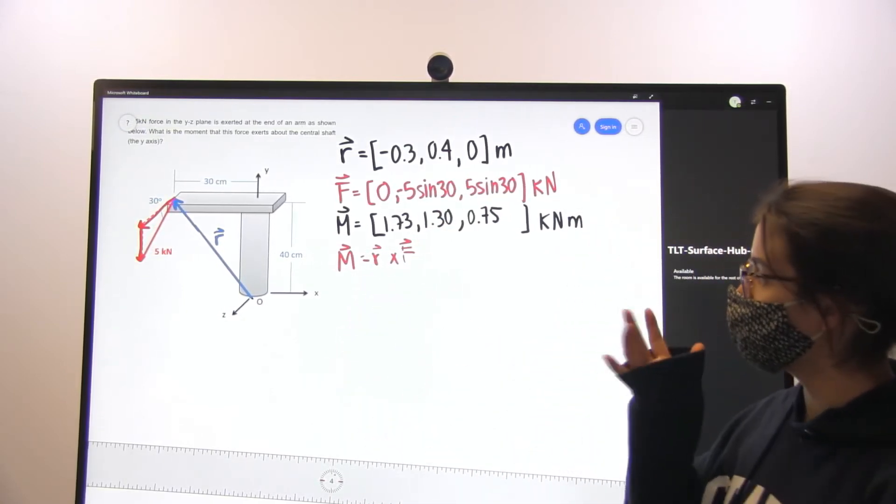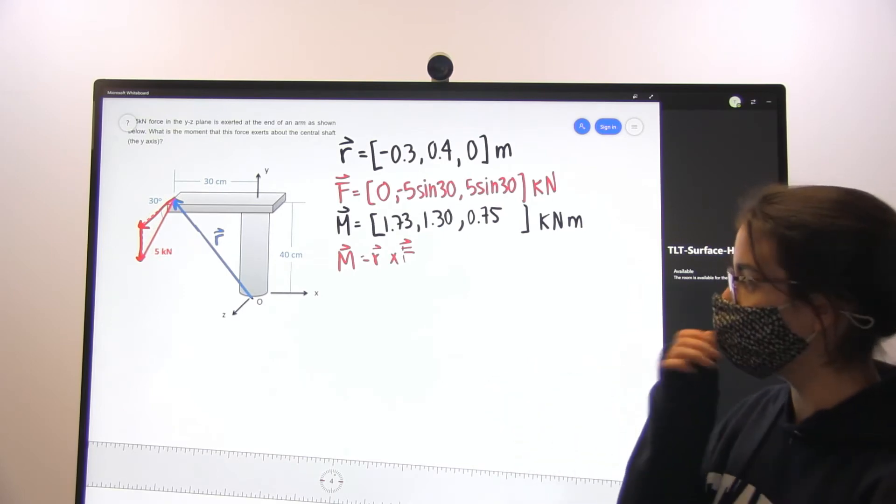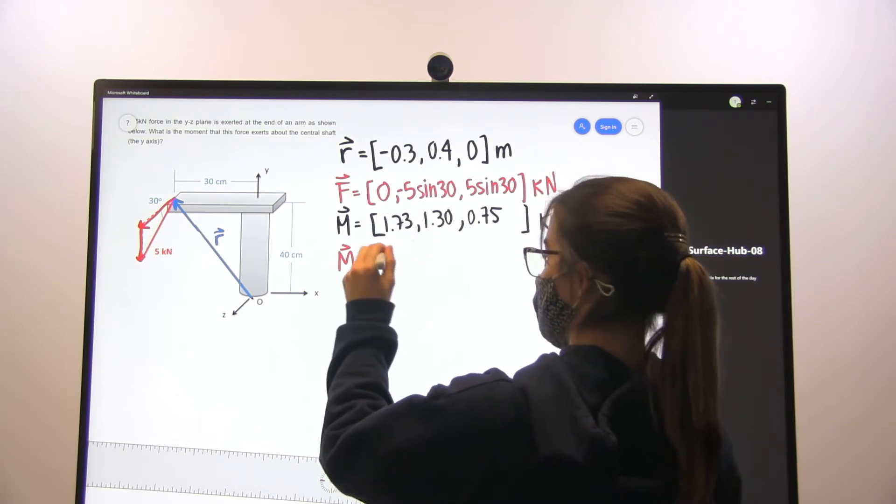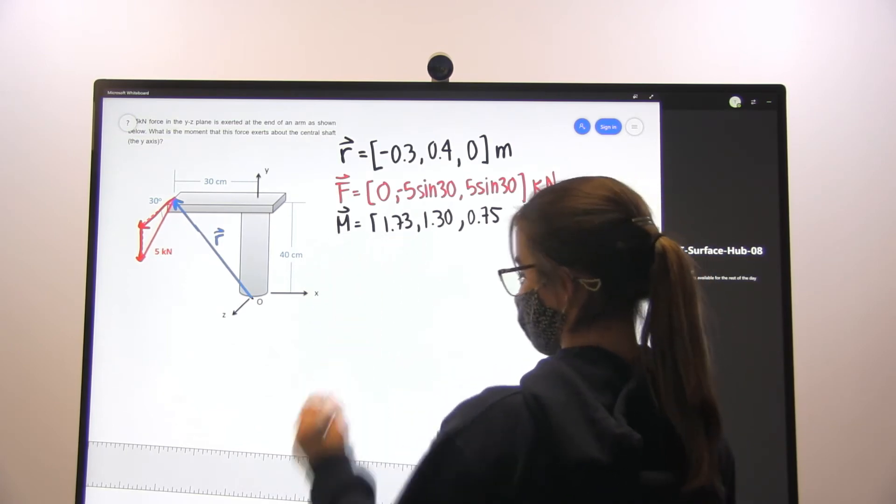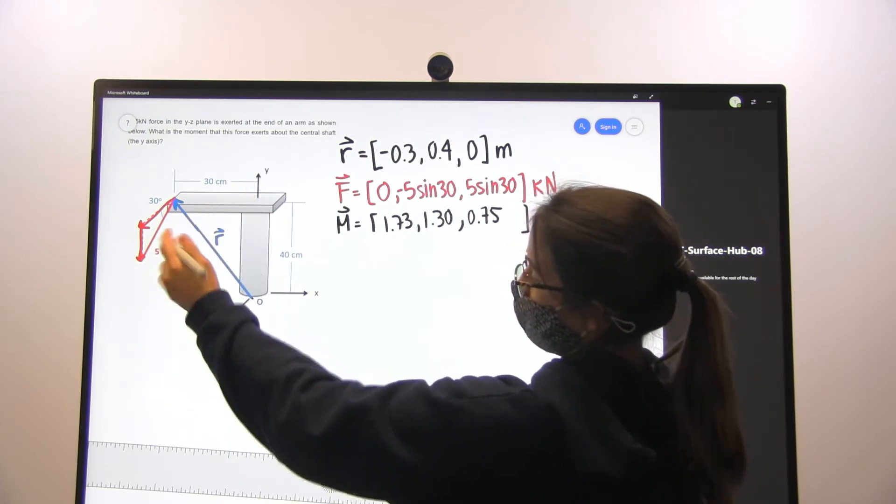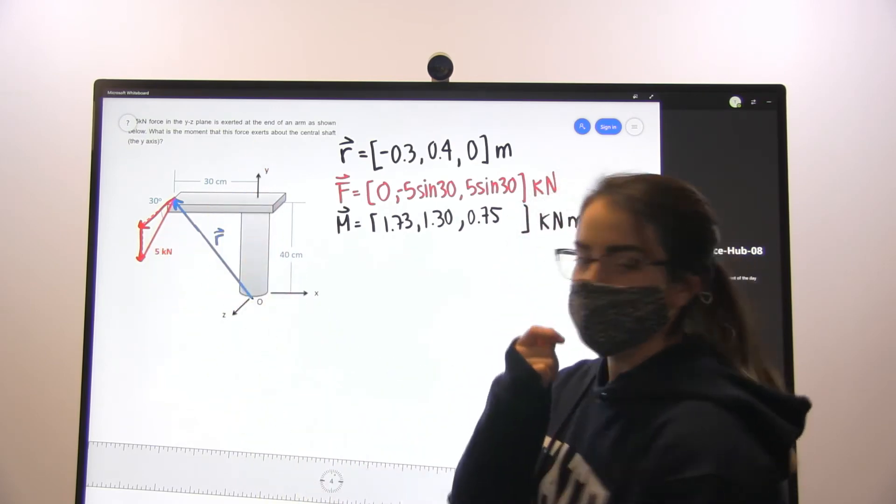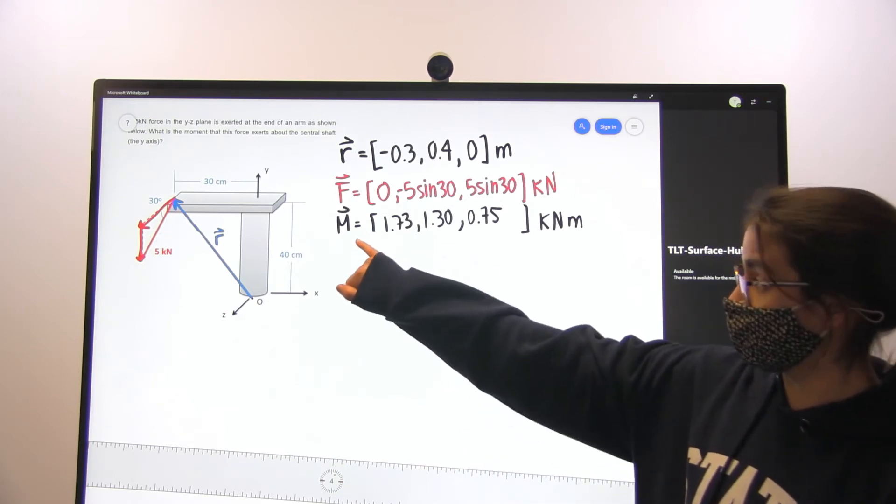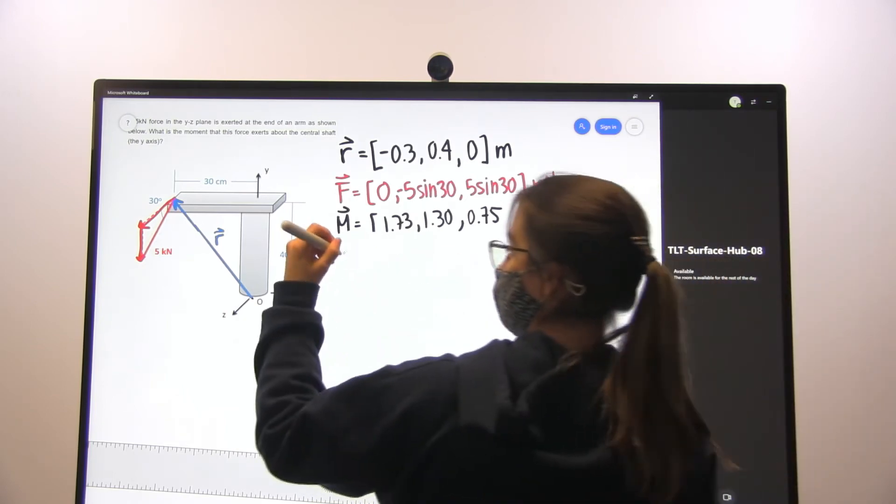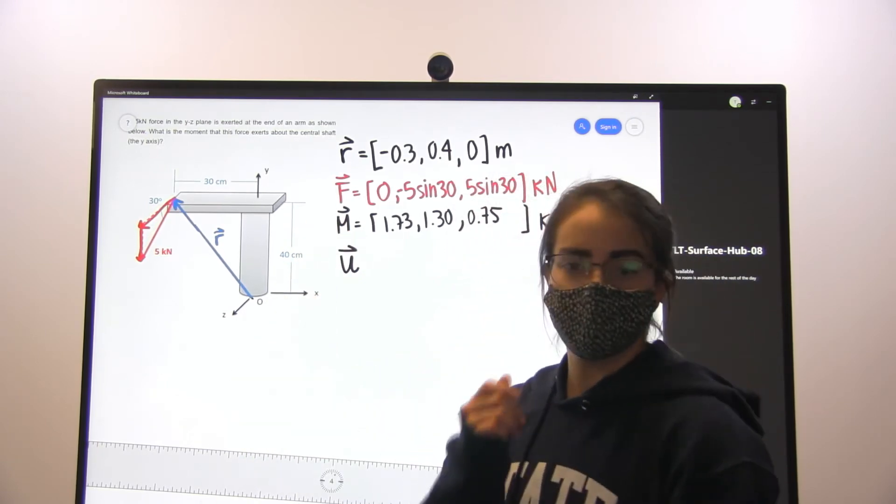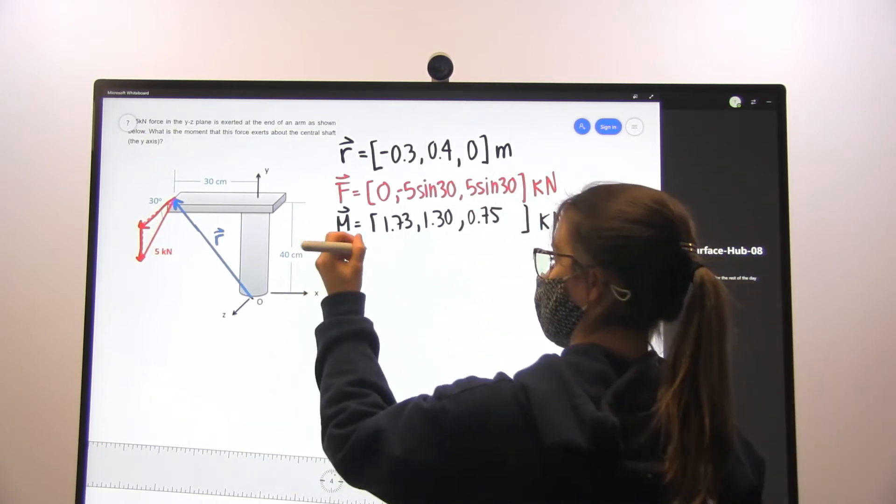But even though we found the moment, we haven't really found what the problem is asking. The problem again is asking for the moment due to the force exerted on our central shaft. So what we want to do is dot our moment vector times our direction vector, which we're going to define as a central shaft, as u.